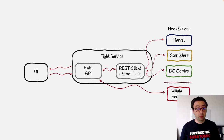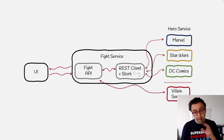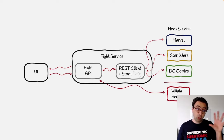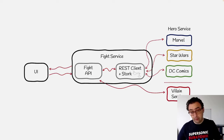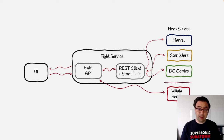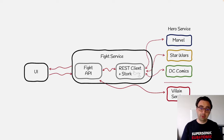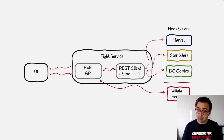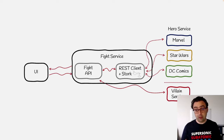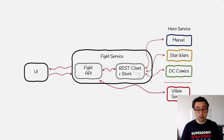In this demo I'm going to reuse the Superheroes sample application from Quarkus — a simplified version focusing on Stork and its integration. We have a UI calling a fight service using a REST API. The fight service calls two types of services: a villain service providing data about the bad guys, and hero services. In this case I have three instances of hero services — one for the Marvel Universe, one for Star Wars, and one for DC Comics. This discovery and selection will be handled by Stork.